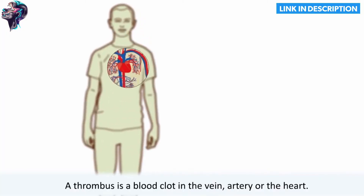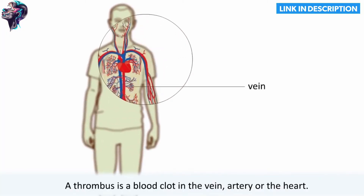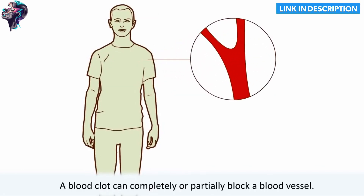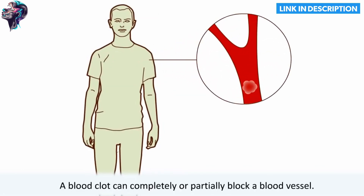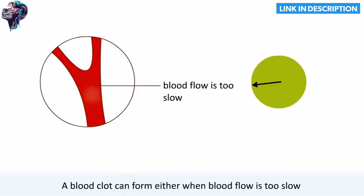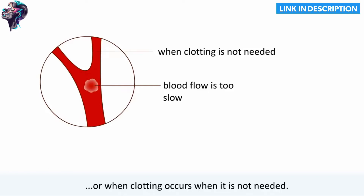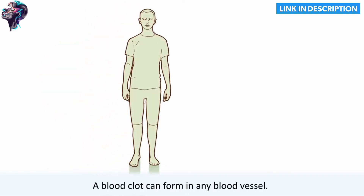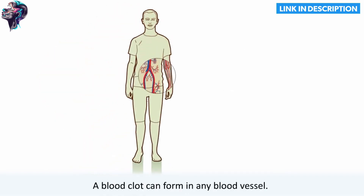A thrombus is a blood clot in a vein, artery, or heart. A blood clot can completely or partially block a blood vessel. A blood clot can form either when blood flow is too slow or when clotting occurs when it is not needed. A blood clot can form in any blood vessel.